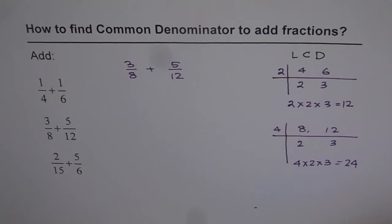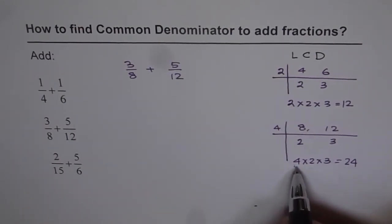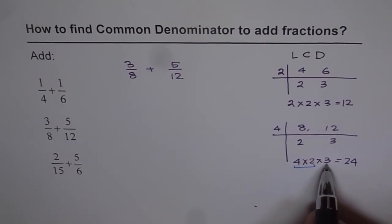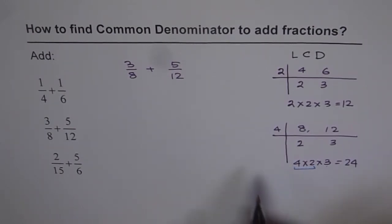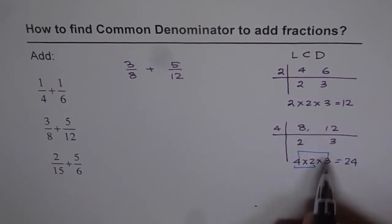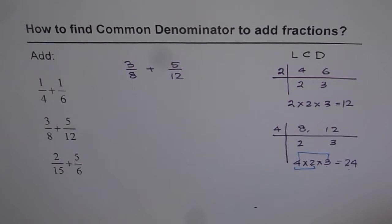Now what we found, 8 and 12 has least common denominator of 24. Now how can I make denominators as 24? Well, 8 is 4 times 2. If I multiply by 3, I get 24. And 12 is 4 times 3. If I multiply by 2, I get 24. So that is how we can make it.